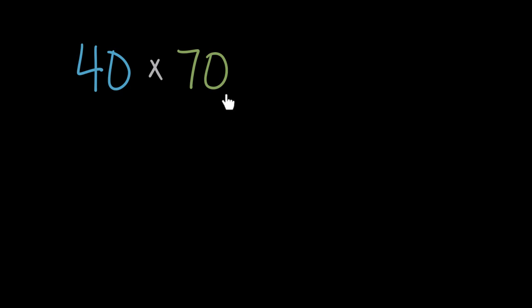Let's multiply 40 times 70. So 40 times we have the number 70. We could actually list that out, the number 70 40 different times and add it up, but that's clearly a lot of computation to do, and there's got to be a faster way.